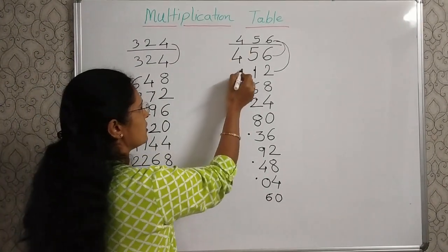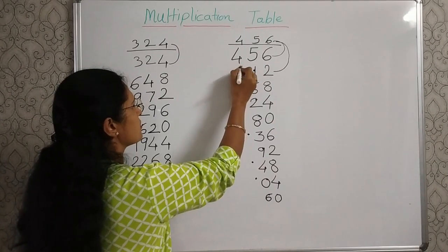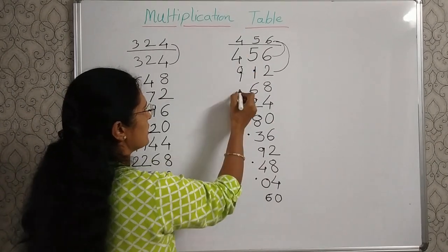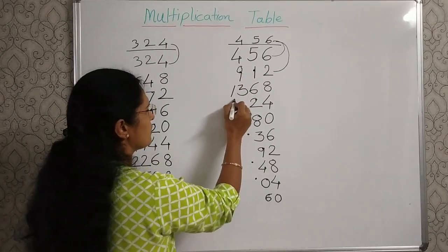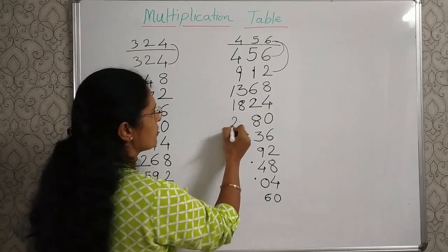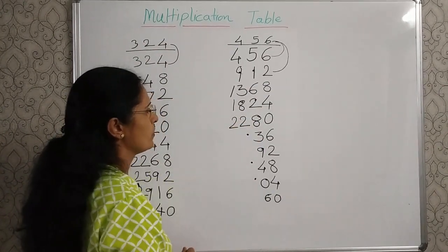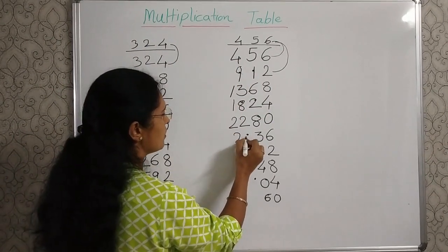4 plus 4, 8, and this one, 9. 9 plus 4, 13. 13 plus 4, 17, and this one, 18. 18 plus 4, 22. 22 plus 4, 26, and this one, 27.